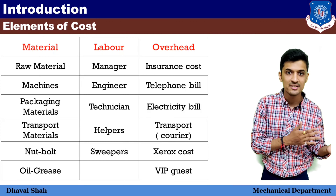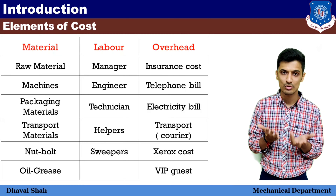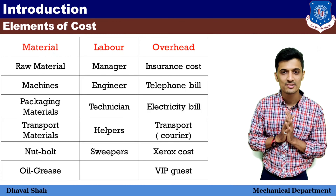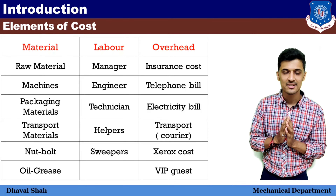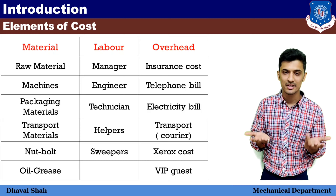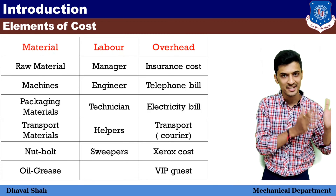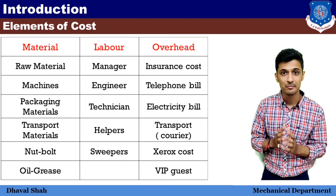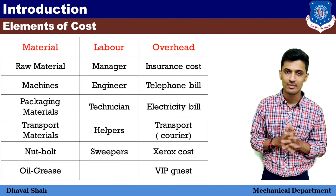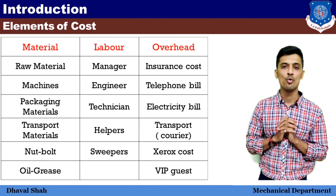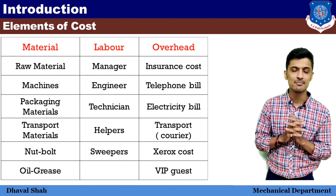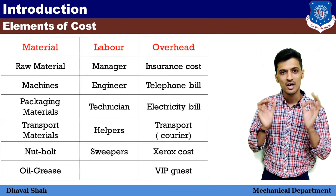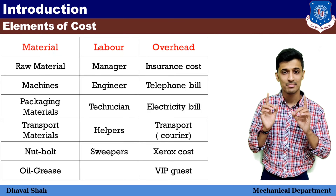Material ke andar hum kaun kaun se materials ginenge — toh raw material hota hai, packaging material hota hai, transporting material hota hai. Yeh sab aur hamare yahan jo machines hain woh sab materials mein hum count karenge. Labor ke andar hum kisko ginenge — labor mein hum ginenge engineers, manager post pe jo kaam karte hain, uske baad jo technician hamare yahan kaam karte hain, helpers jo kaam karte hain, sweeper — yeh sab ko hum labor mein ginenge.